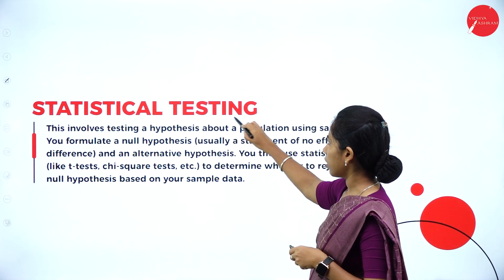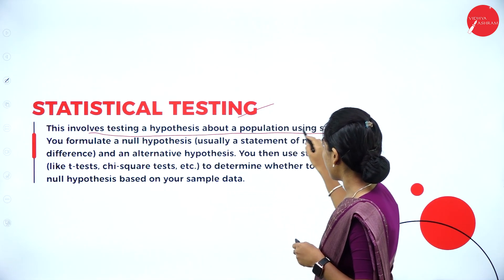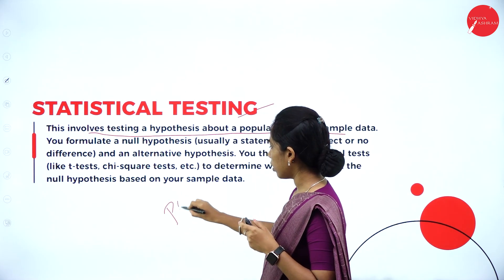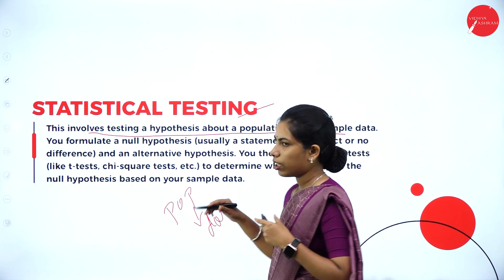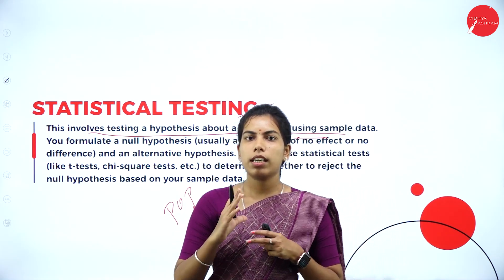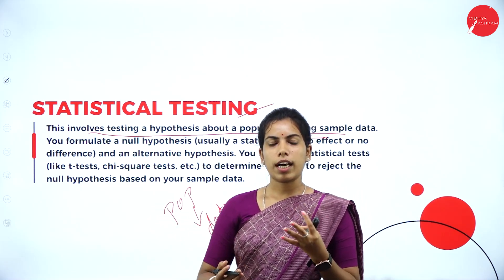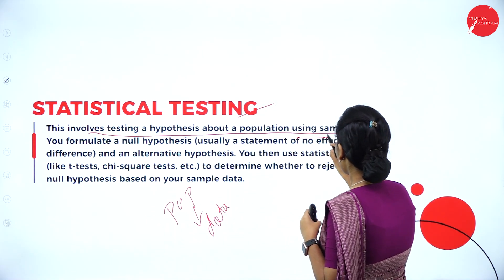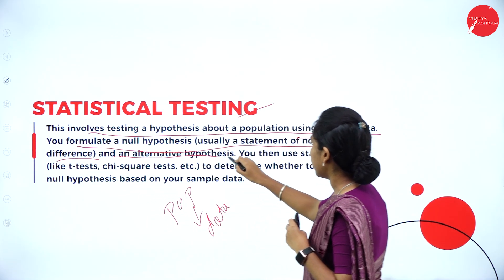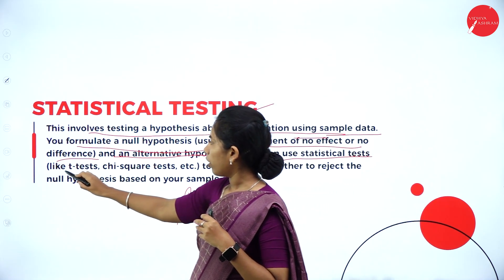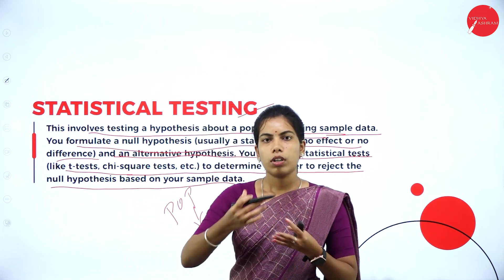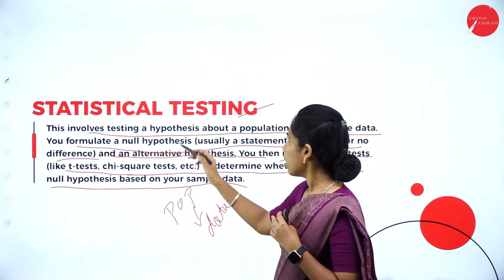Statistical testing is nothing but hypothesis testing about the population. Population is nothing but data — it is also called population or sample data in statistical computing, because it uses some statistical and scientific terms. That's why population is defined as data and also sampling data. Here you can see formulating a null hypothesis, usually a statement of no effect or no difference, and also the alternative hypothesis.